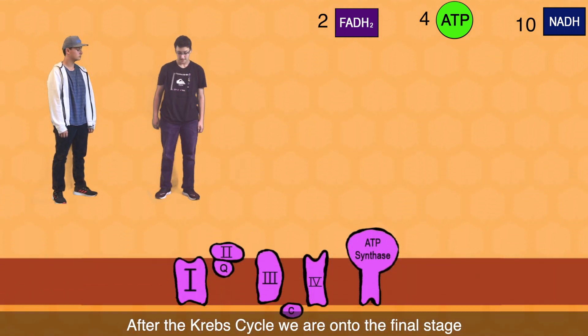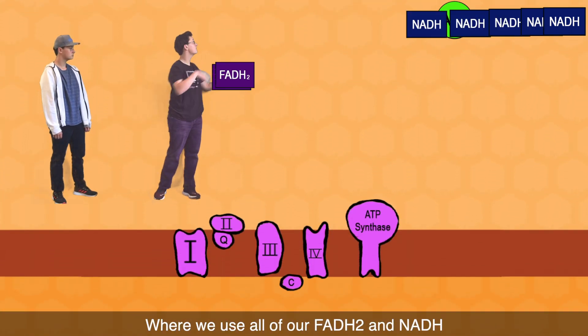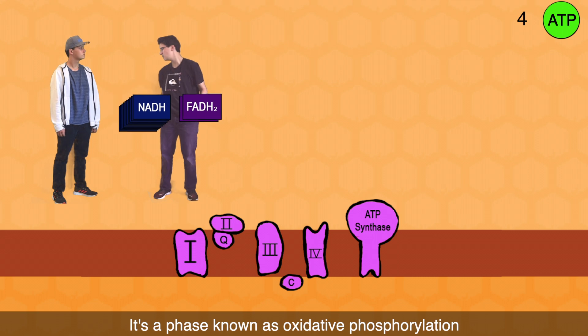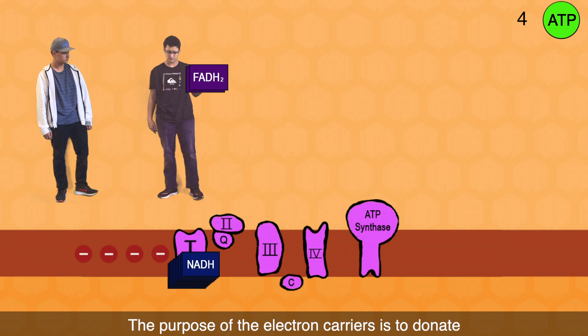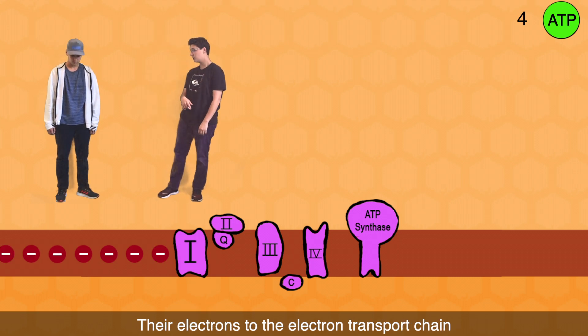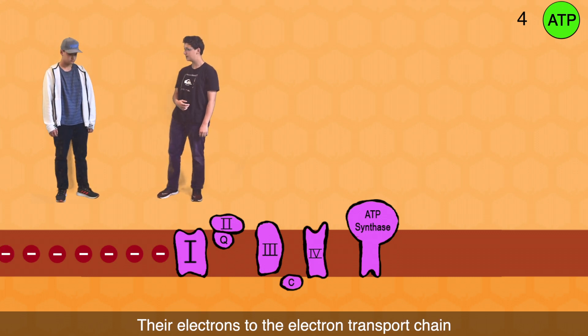After the Krebs cycle we are on to the final stage. Where we use all of our FADH2 and NADH. It's a phase known as oxidative phosphorylation. Where all of the things we've done lead to ATP creation. The purpose of the electron carriers is to donate their electrons to the electron transport chain.